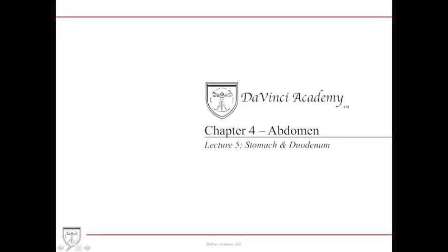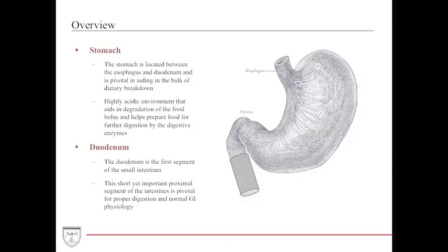Welcome to Da Vinci Academy's Chapter 4 section, Lecture 5 on the Stomach and Duodenum. The stomach is a very important GI organ located between the esophagus and duodenum, pivotal in aiding the bulk of dietary breakdown. It is a highly acidic environment that secretes hydrochloric acid to degrade the food bolus and also secretes digestive enzymes. The duodenum is the first section of the small intestines — short but very important for proper digestion and digestive enzyme secretion.